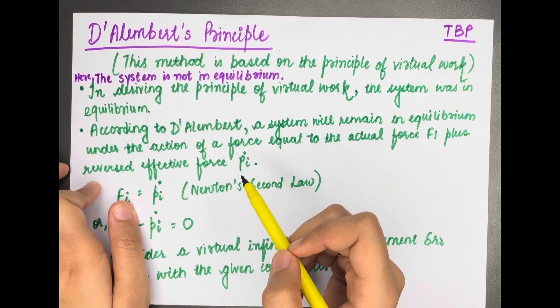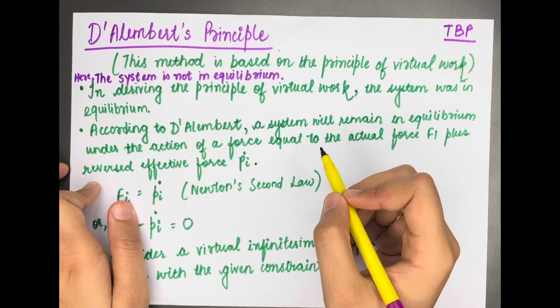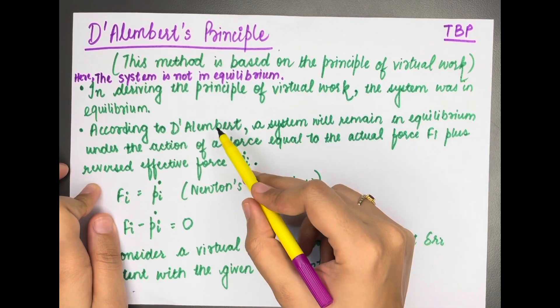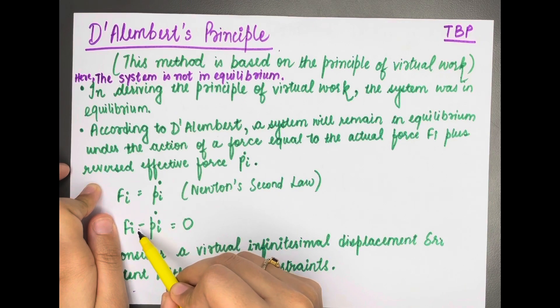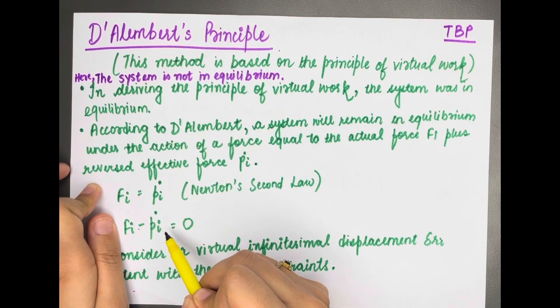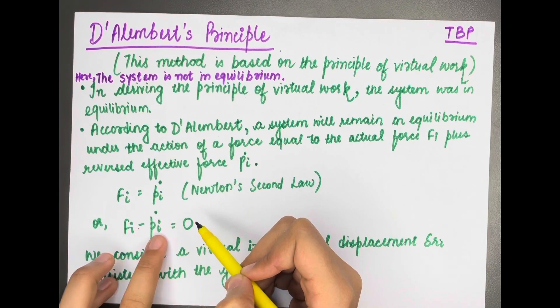D'Alembert said that Fi plus the reversed effective force pi dot is equal to zero. This system is in equilibrium. The system which has been applied with the force equal to Fi minus pi dot is in equilibrium.